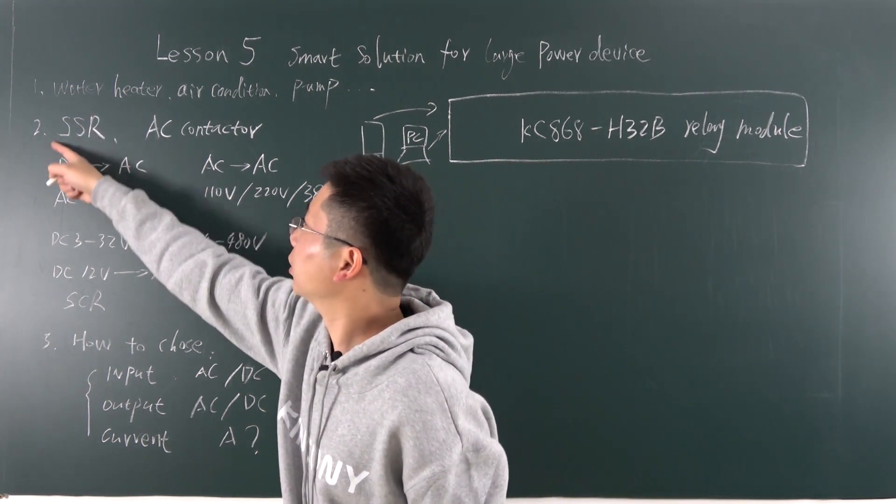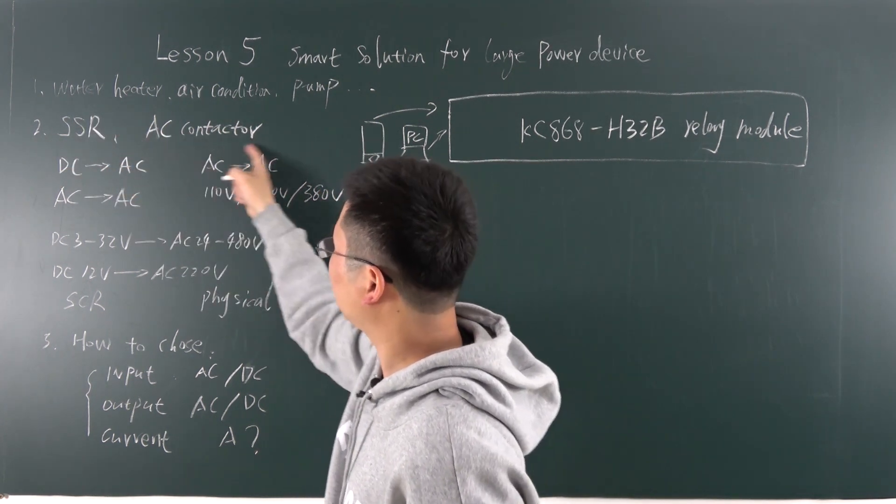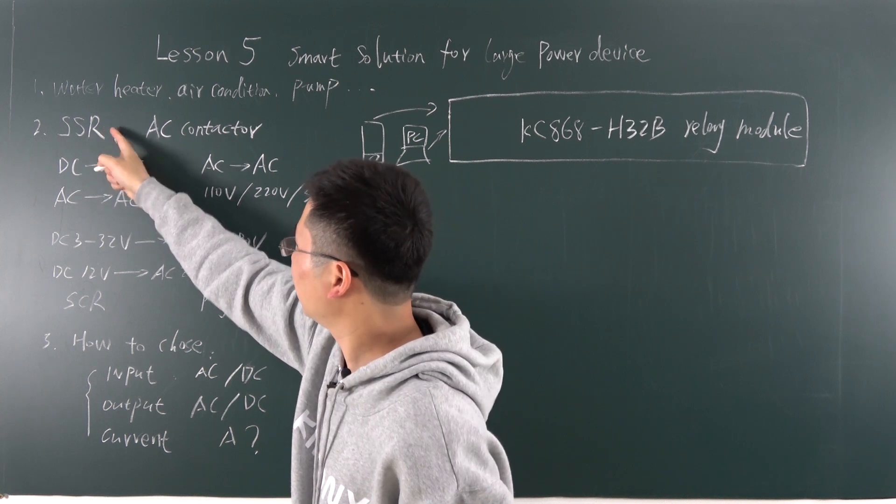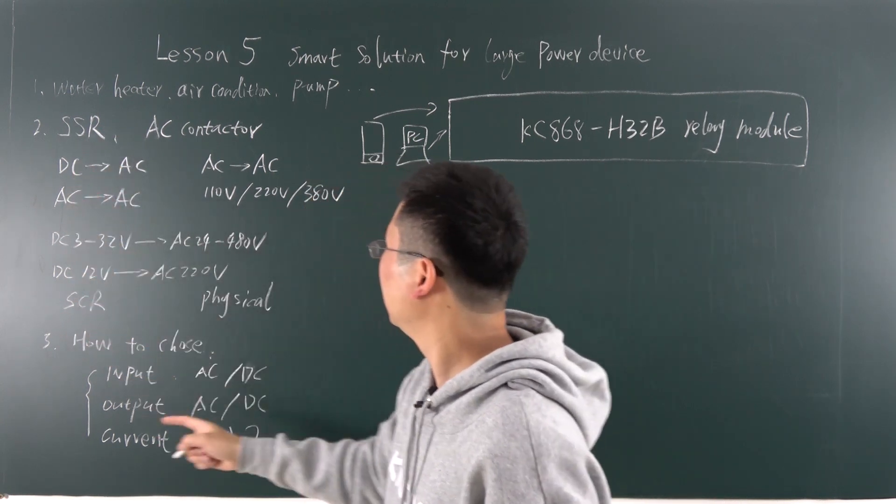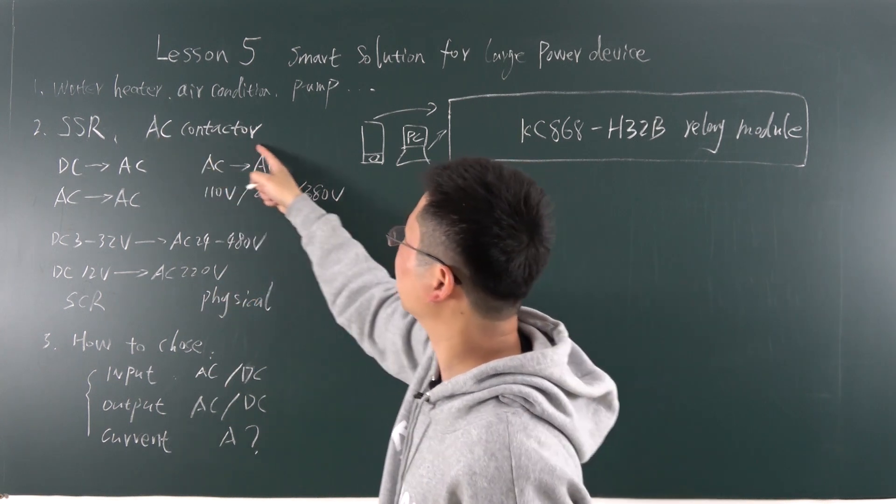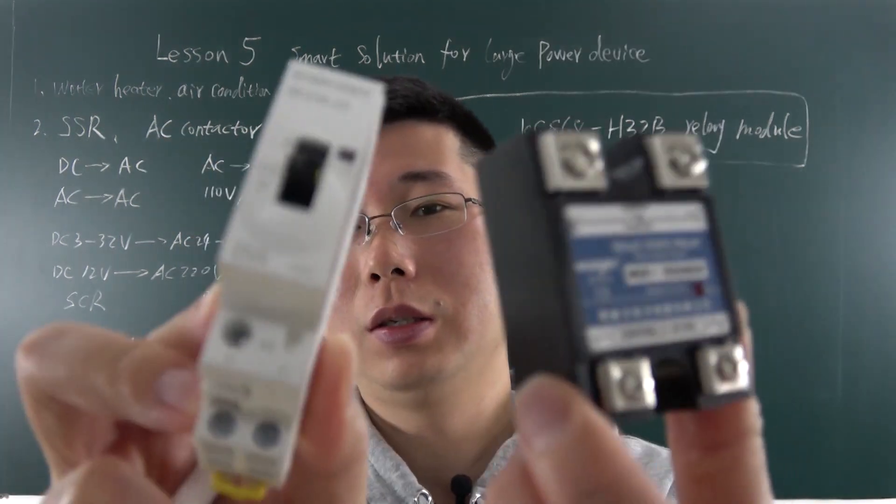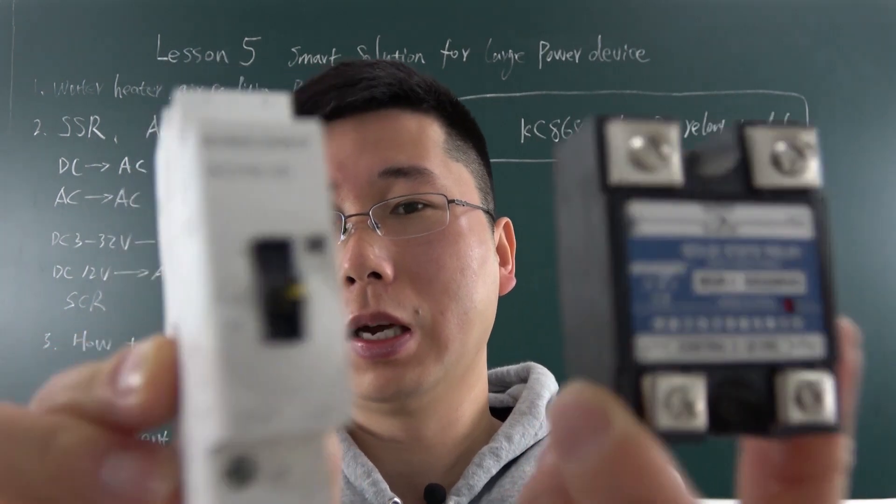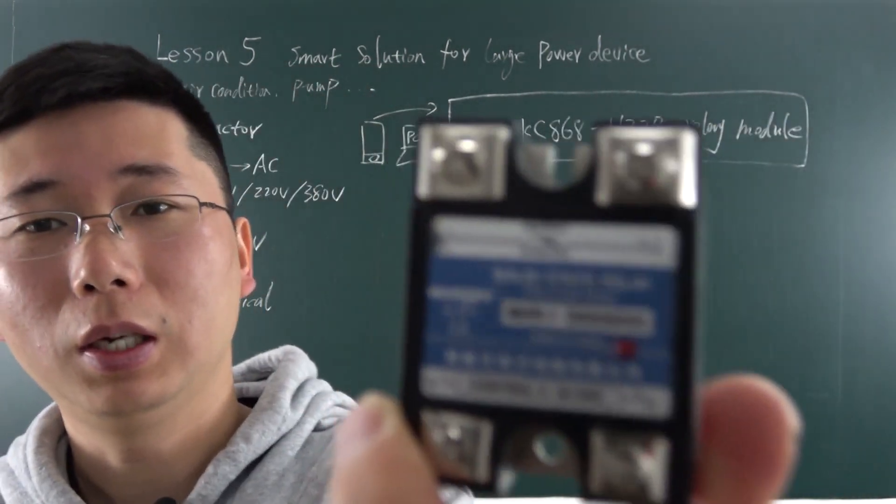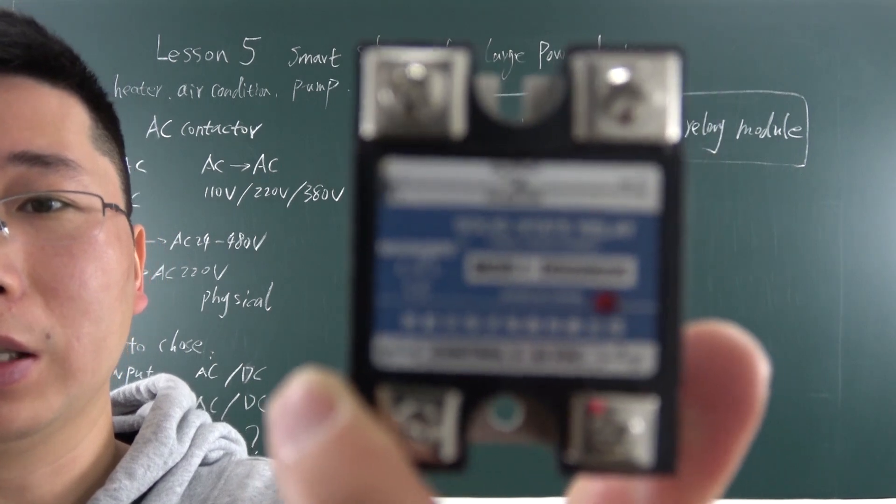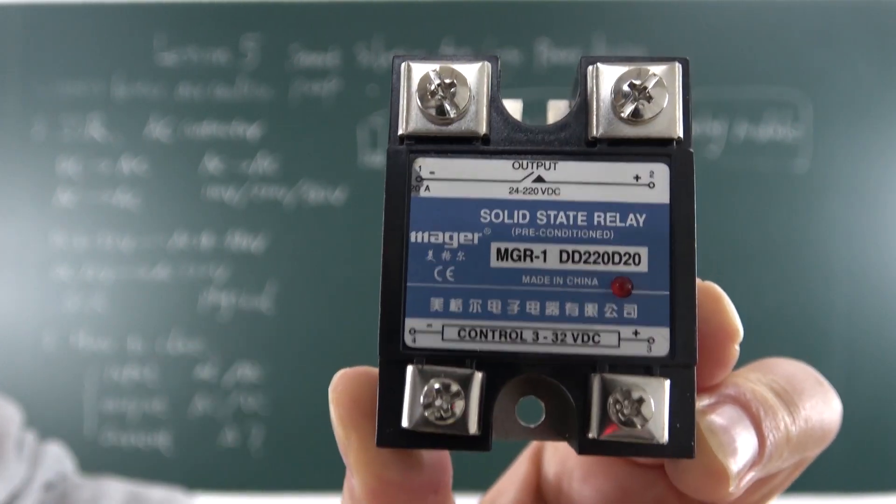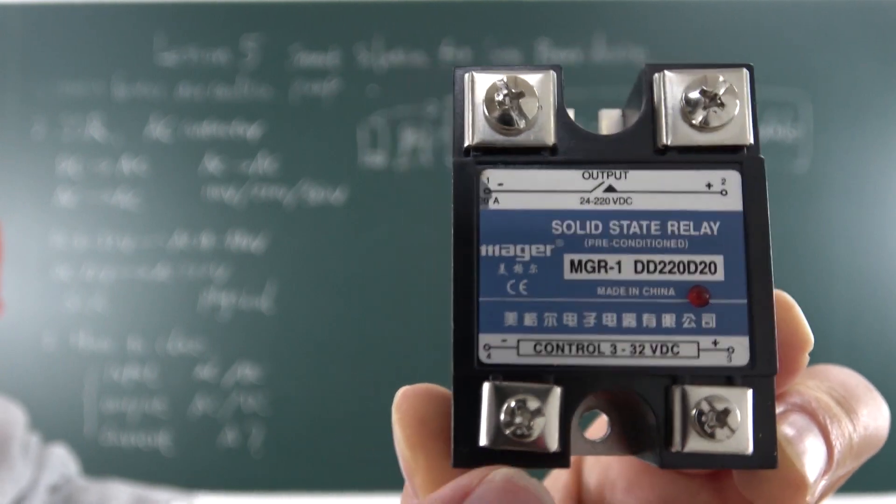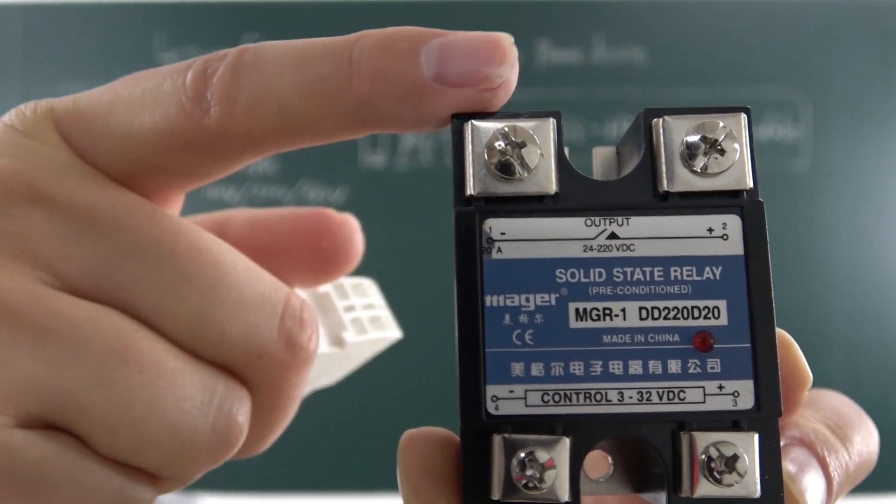So this is SSR, this is AC contactor. This is SCR inside of this part. And this is the physical one. I can show you. You can see these two parts have different size. And this has SCR inside. This is solid state relay, SSR. This has input, DC input. And this is the load output. So this is SSR's input and output.